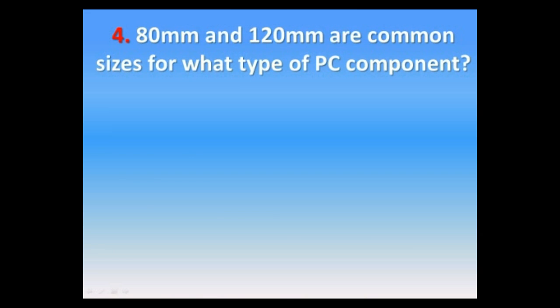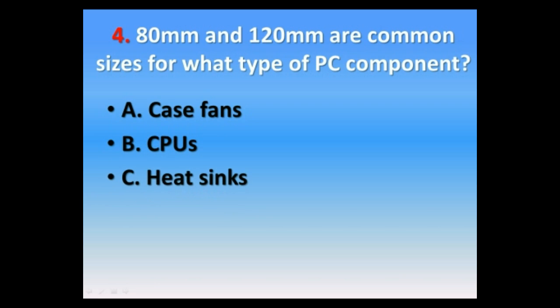Question number four. 80 mm and 120 mm are common sizes of what type of PC component? A. Case fans, B. CPUs, C. Heat sinks, D. Memory modules. The correct answer is A. Case fans.